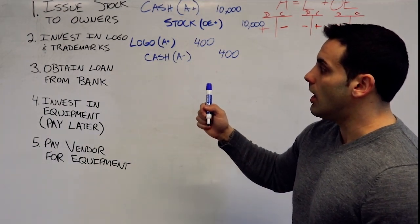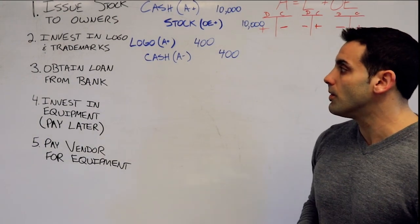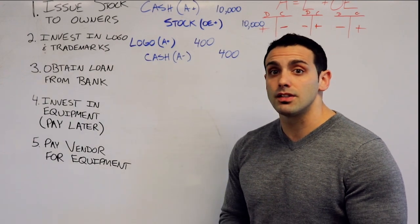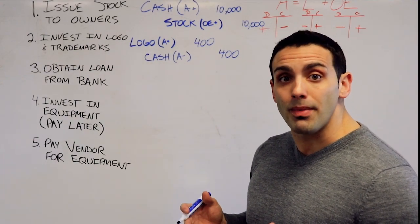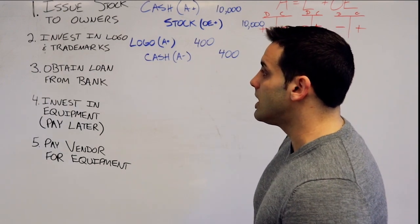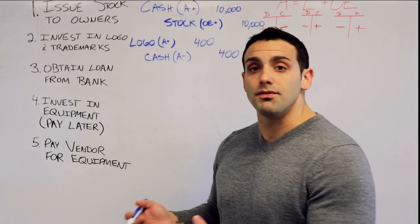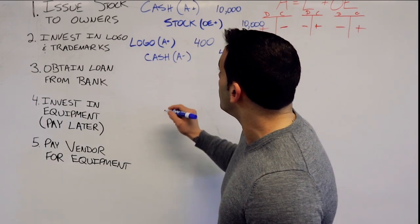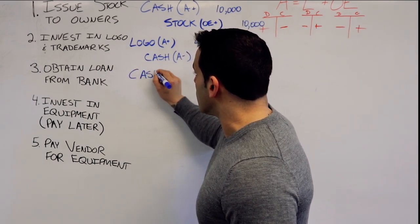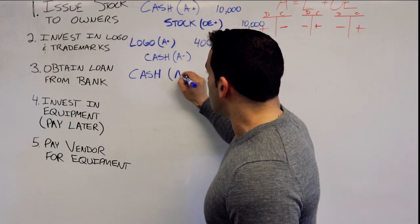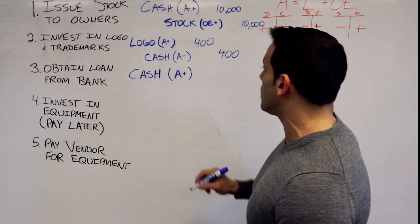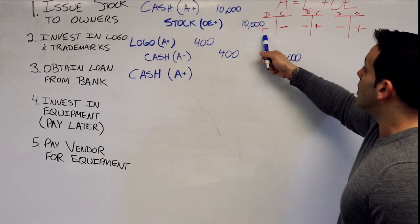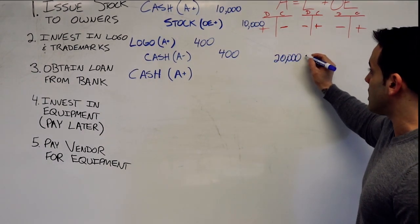The third one, obtain a loan from a bank. So the business goes to the bank and says, I need money to invest or get supplies for my business. So what's happening here is usually the bank gives you money, right? You're taking out a loan. So I think we already have an idea of how that's going to go. We have cash is an asset that we're increasing. Let's say we're looking for $20,000. So we're going to analyze it. We have $20,000 asset increasing.